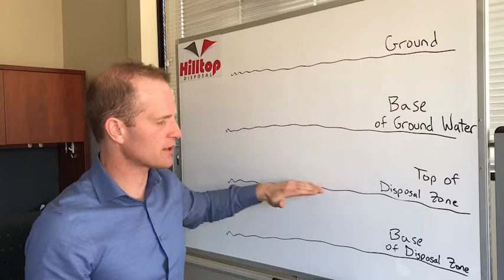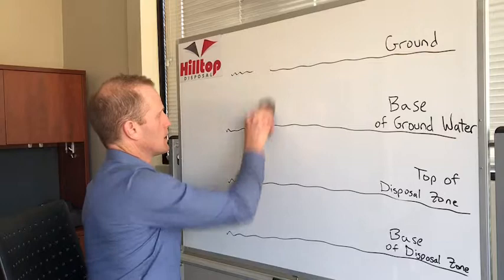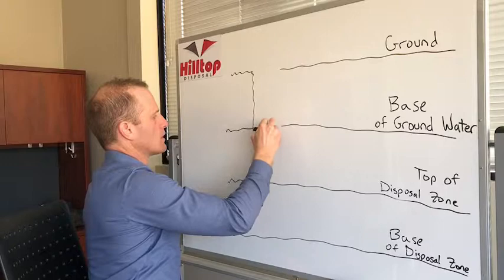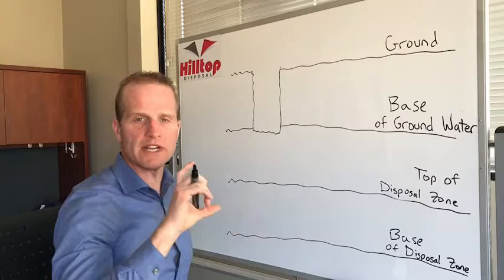So when you first drill, you drill a hole from ground level through the base of your ground water. Now your ground water is always going to be near surface and it's very important you put extra protection across it.